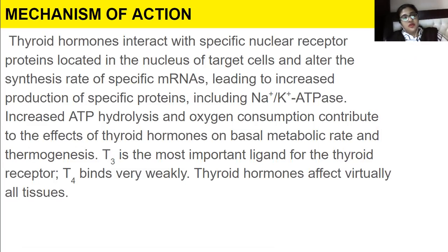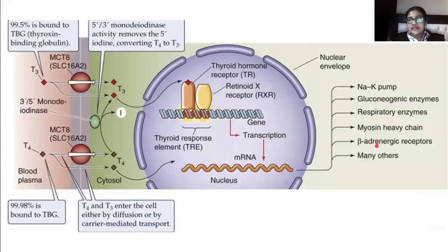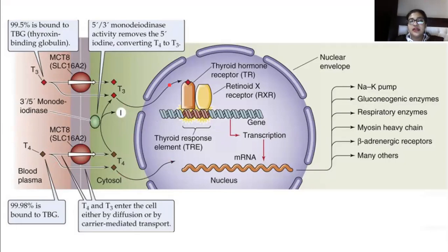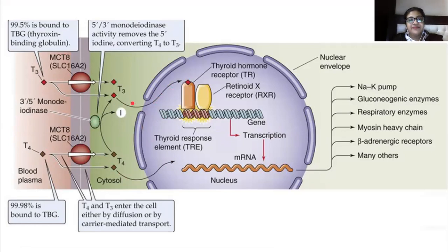Regarding mechanism of action: T3 and T4 enter from the blood plasma into the cell, cross the cell membrane, pass through the nuclear pore into the nucleus. Within the nucleoplasm there is a thyroid hormone receptor. T3 and T4 attach to it, and a specific gene — the thyroid response element — is transcribed, producing messenger RNA.